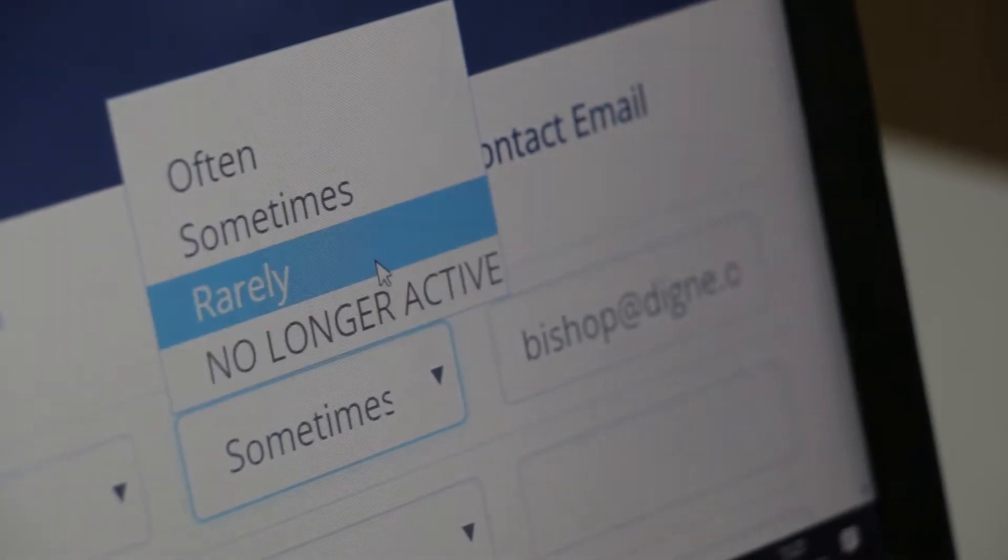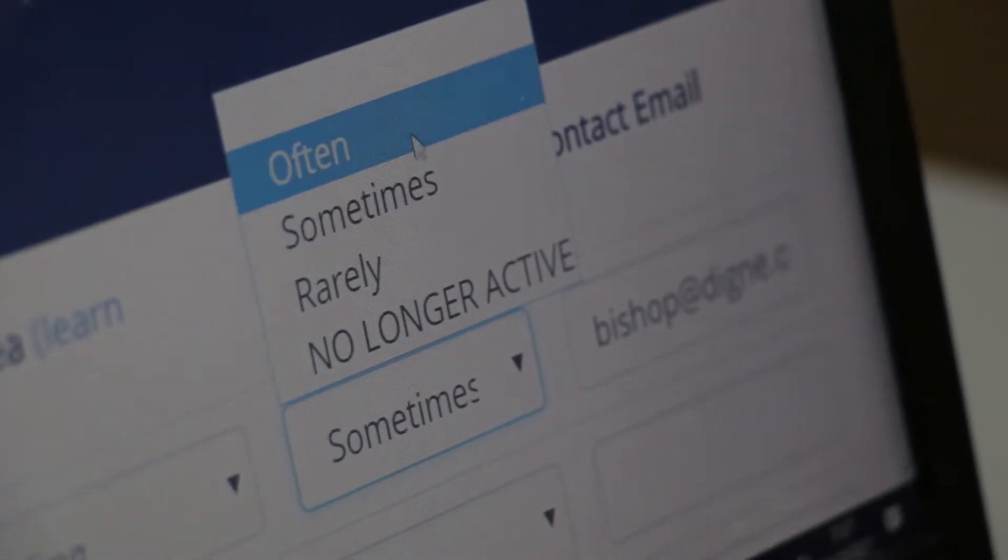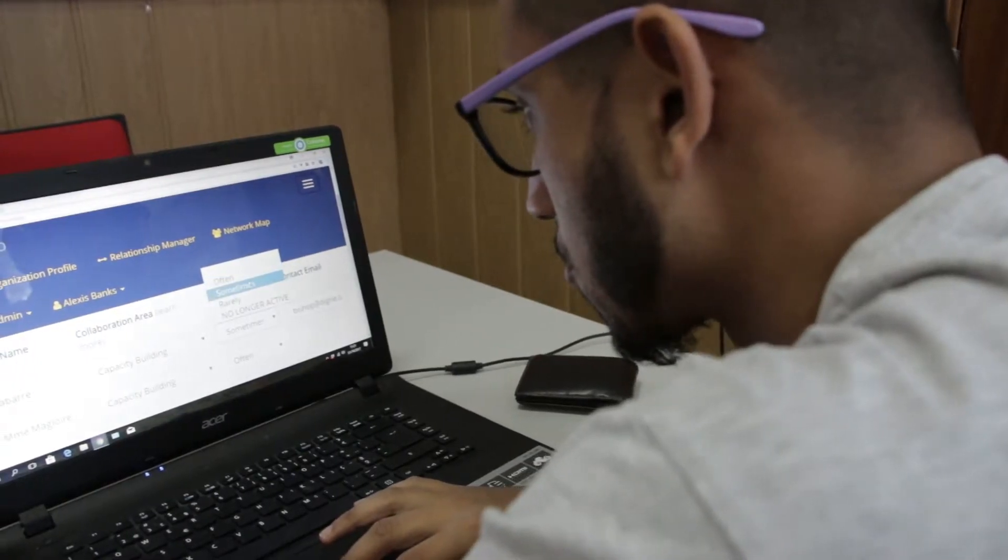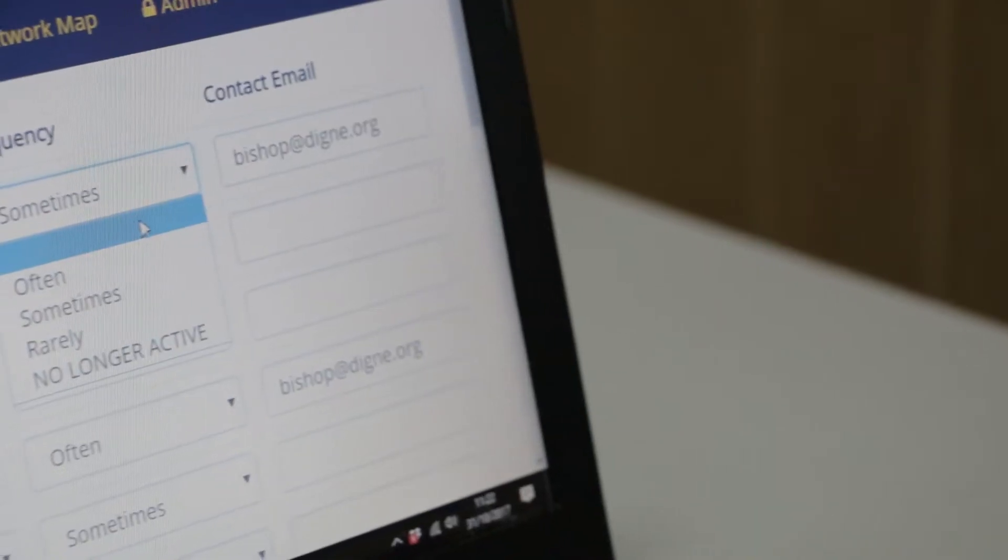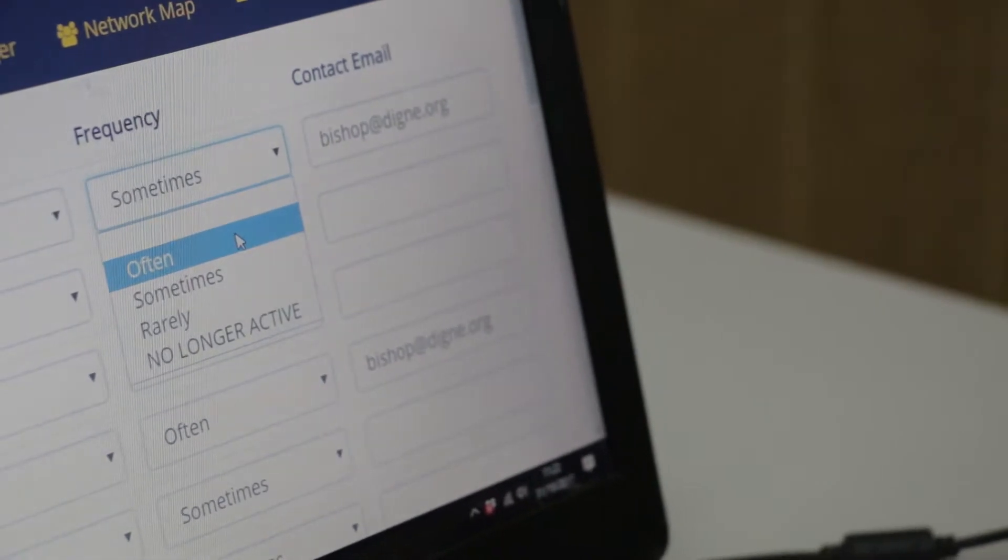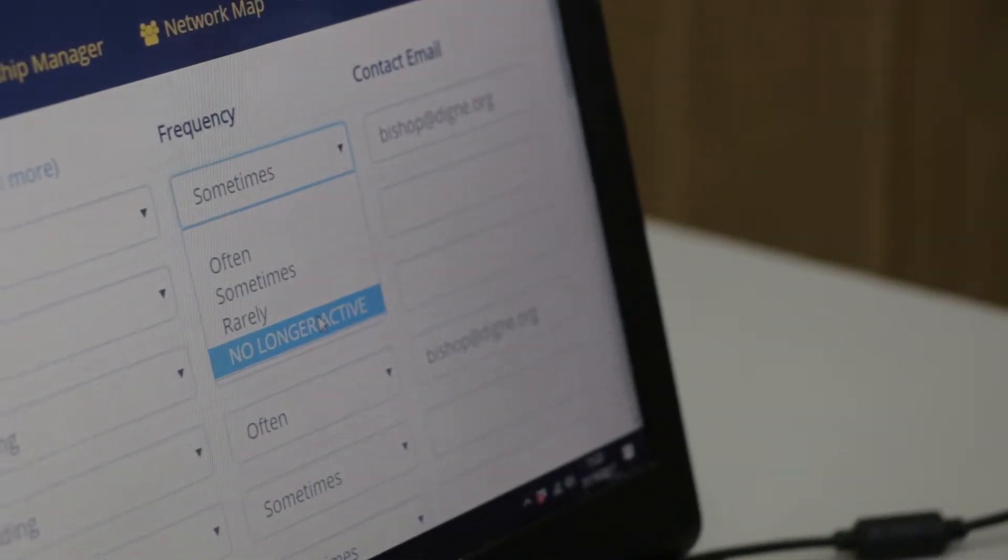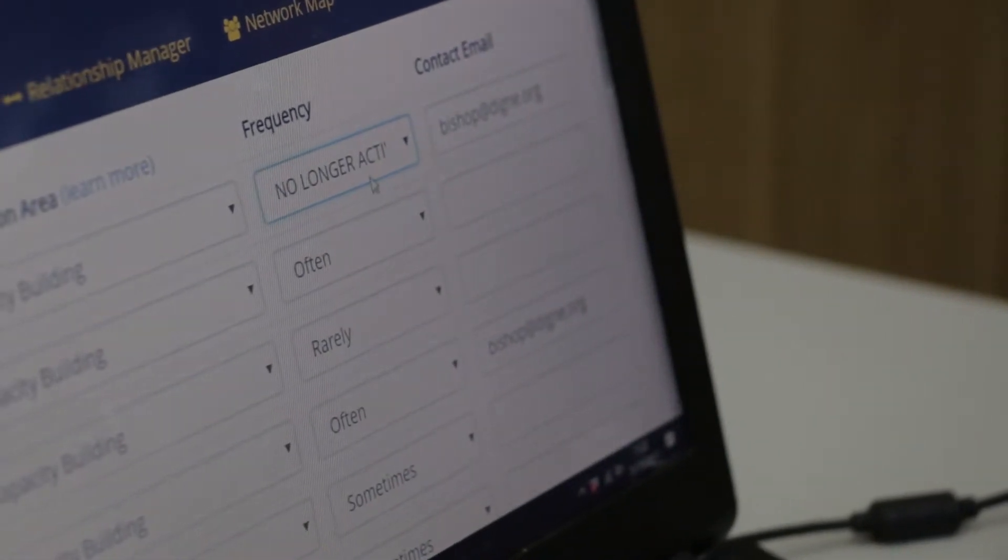Next, users will be asked about the frequency of interaction with the actors they listed. See here? This frequency question helps you understand the strength of the relationship. Remember? Participants can put if they interact often, sometimes or rarely. Users can also indicate that they are no longer connecting with an actor by selecting no longer active.